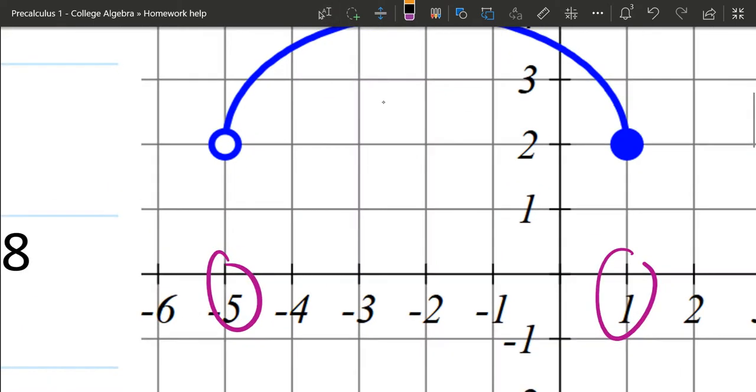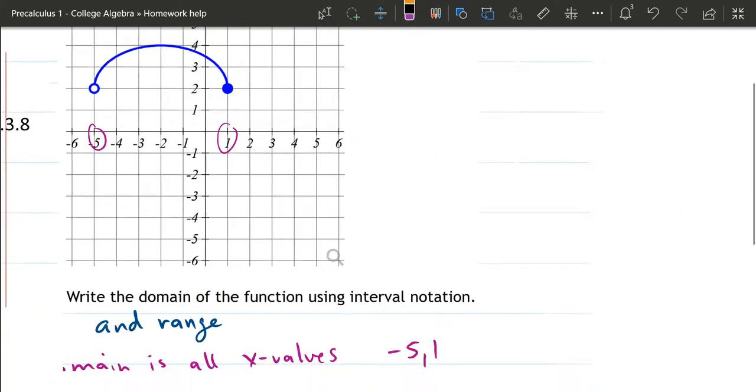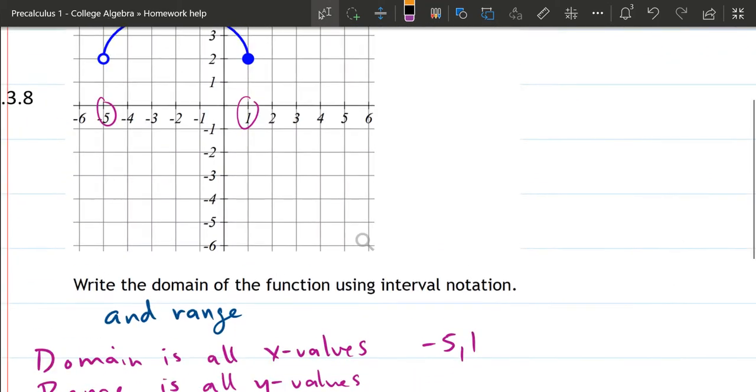Looking at the graph here, this circle, the empty circle means do not include that point. So the negative 5, we do not include. And the way we write that is a parenthesis on the left.